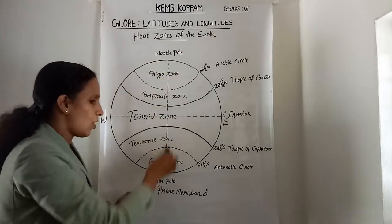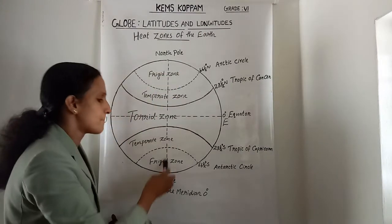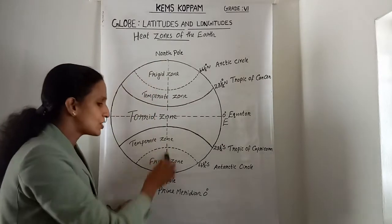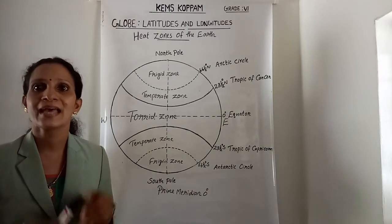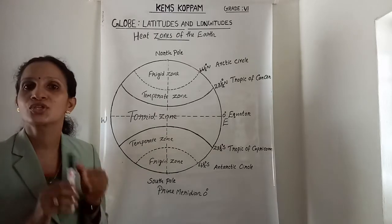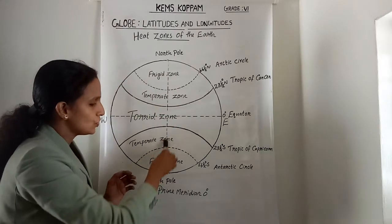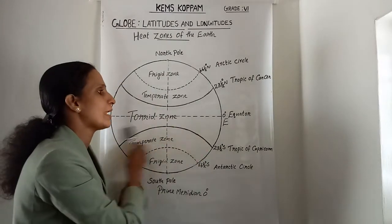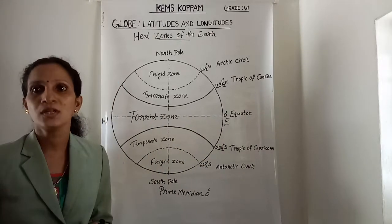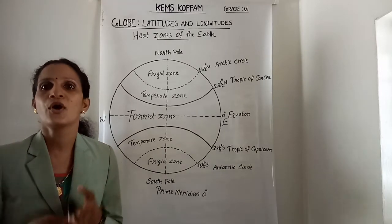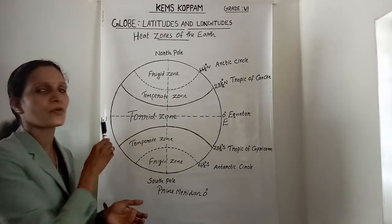Zero-degree longitude is known as the Prime Meridian. The Prime Meridian divides the earth into two equal halves — the eastern hemisphere and the western hemisphere. Therefore, the longitude of a place is followed by the letter E for east and W for west.